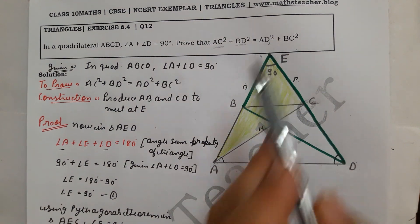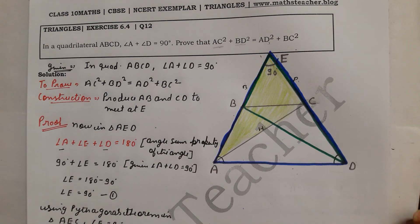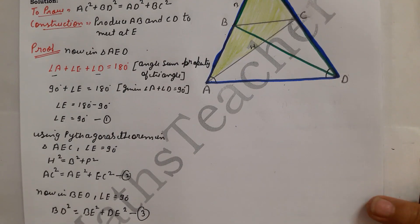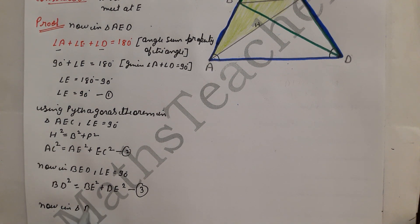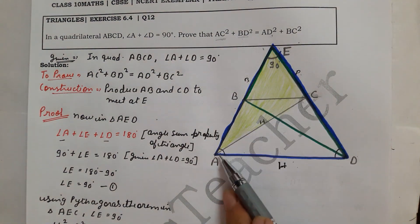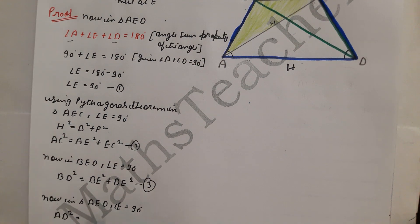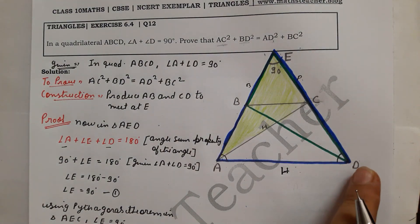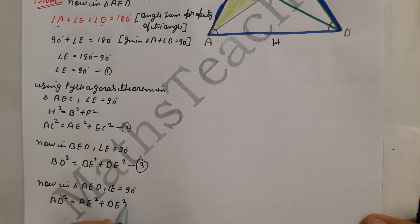Now for AD², we use the larger triangle AED. Angle E is 90 degrees, so AD is the hypotenuse. Applying Pythagoras theorem in triangle AED: AD² equals AE² plus DE². This is equation number 4.